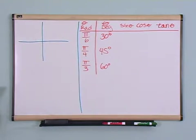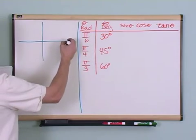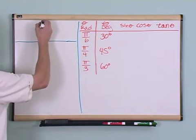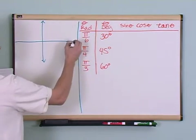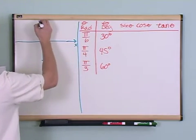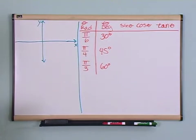And then what we're going to draw up here is a unit circle. Like this. This is a unit circle. And what I mean by unit circle, you'll find out here in just a second. This is the x-axis. This is the y-axis.